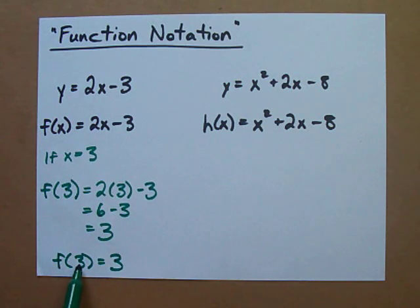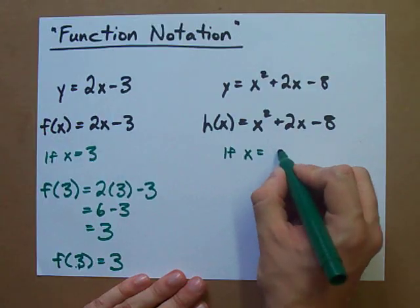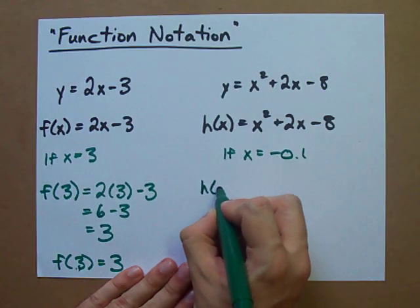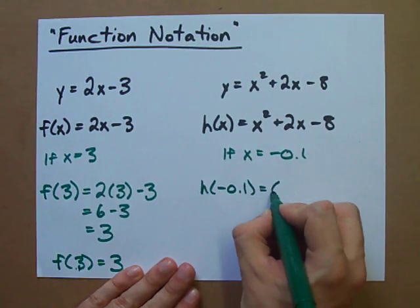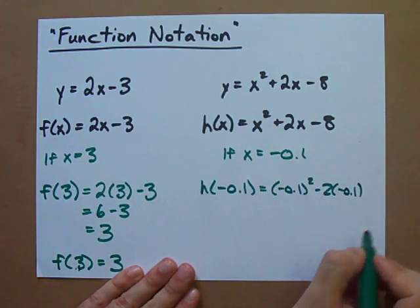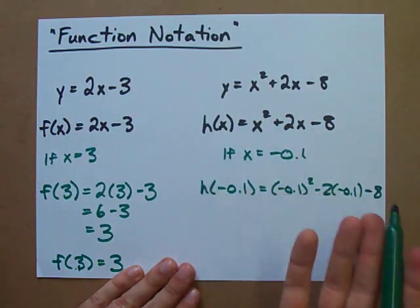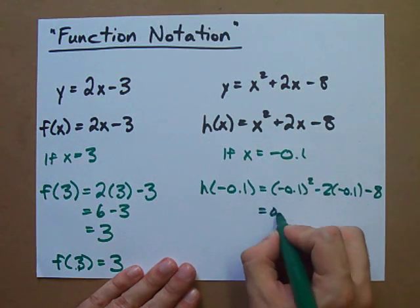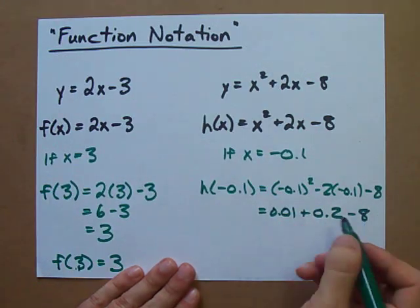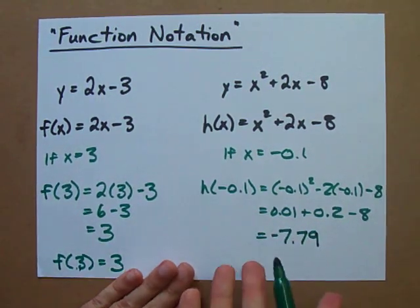This way we're able to also tell whoever's watching our math that the x that we plugged in was 3 to get y equals 3. Maybe x turns out to be negative 0.1, so h of negative 0.1 is negative 0.1 squared minus 2 times negative 0.1 minus 8. See, everywhere we have x we just plug in negative 0.1. This turns out to be 0.01 plus 0.2 minus 8.